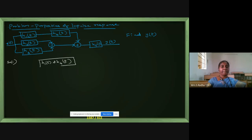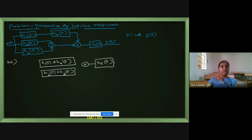H2 of T and H3 of T are in parallel, so we take addition between them. Then comes the summation point. After the summation point H5 of T is there, and after H5 it is Y of T. The equivalent blocks are getting added, and our overall input is X of T. In place of four blocks I have converted into two blocks.